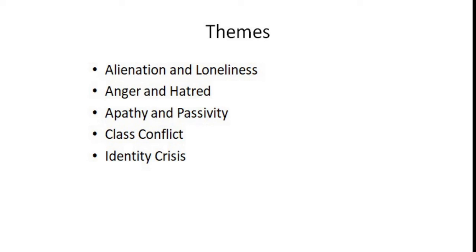He thinks that these systems have kept him away from his dreams and aspirations. The next theme is class conflict. Jimmy belongs to the working class while his wife belongs to an upper middle class family. The difference in social status between husband and wife is the main cause of dissatisfaction in their life.